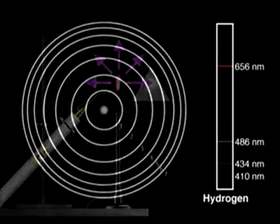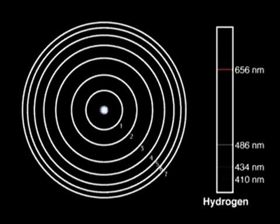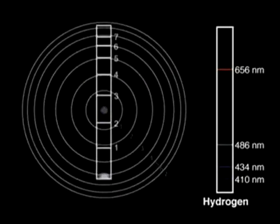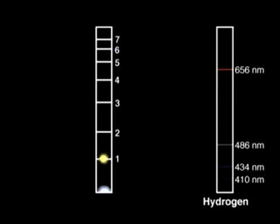A cross-section of an atom shows the energy levels similar to the rungs of a ladder. When energized, the electrons move temporarily to higher energy levels.